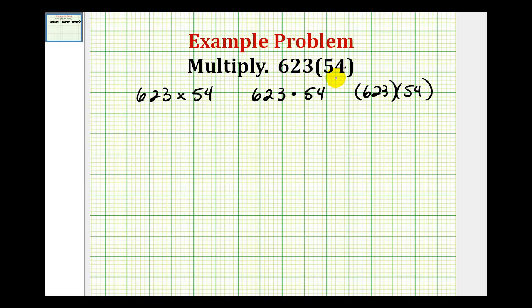The first step is to write this multiplication problem vertically, lining up our place values. So, we'll have 623 times 54.